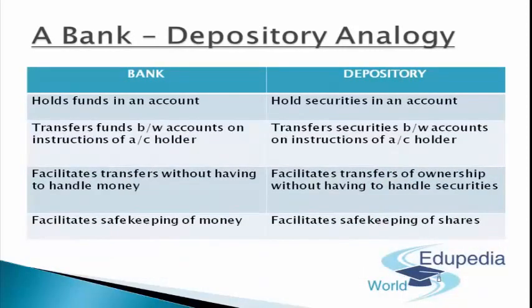Let's look at the analogy between a bank and a depository. In case of a bank, you hold your funds in an account; in case of a depository, you hold your securities in an account. A bank transfers funds between accounts on instructions of the account holder; a depository transfers securities between accounts on instructions of the account holder. A bank facilitates transfers without handling money physically; a depository facilitates transfer of ownership without handling securities. A bank's main job is safekeeping of money; a depository's main objective is safekeeping of shares.